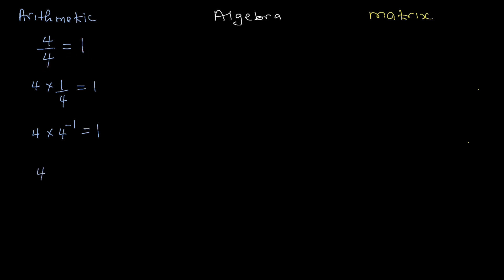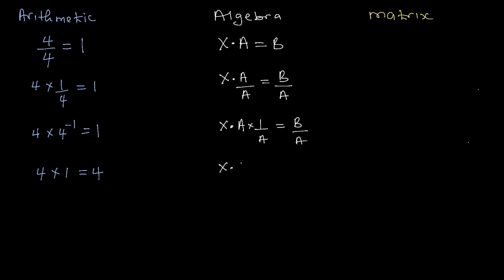If you multiply four by one you get four. In algebra, if you have x times a equals b and you want to make x the subject, you divide both sides by a. We can write that as x times a times one over a equals b over a, or x times a times a to the power of minus one equals b over a, since a times a to the power minus one is one, the identity. So x equals b over a.